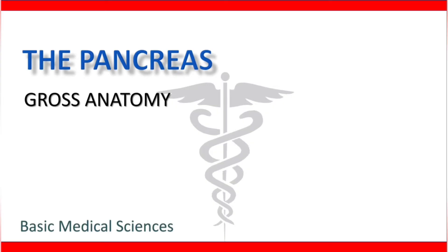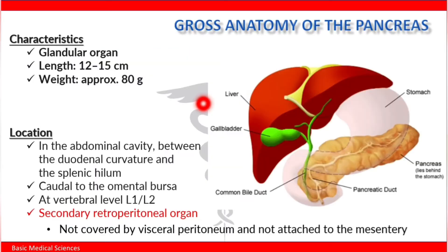In this video we are going to discuss the gross anatomy of the pancreas. The pancreas is a glandular organ. Its length is about 12 to 15 centimeters and it weighs approximately 80 grams.